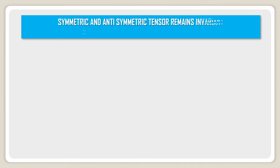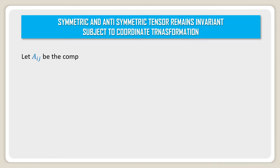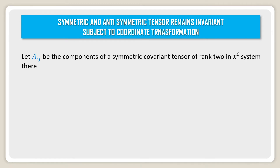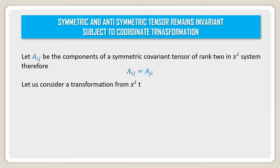Symmetric and anti-symmetric tensors remain invariant subject to coordinate transformation. Let a_{ij} with a lower suffix ij be the components of a symmetric covariant tensor of rank 2 in the X^i system. Therefore, a_{ij} = a_{ji}. Let us consider a transformation from the X^i to the X'^i system.